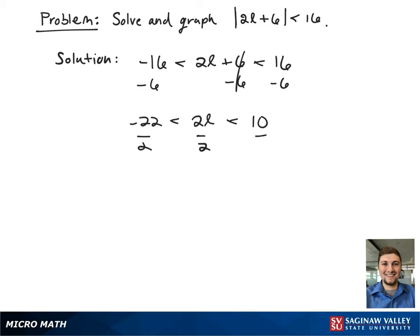Next, to get L by itself, we're going to divide all sides by 2. This gives negative 11 is less than L is less than 5.